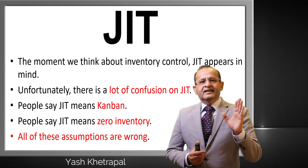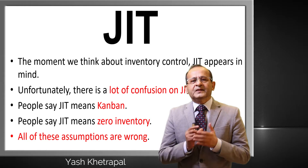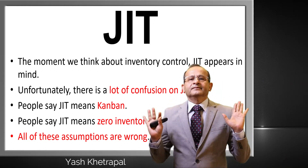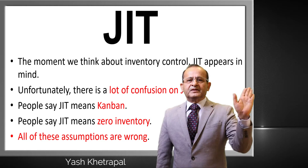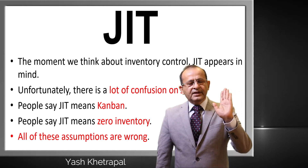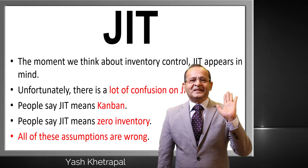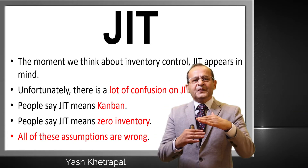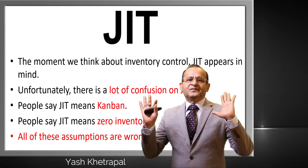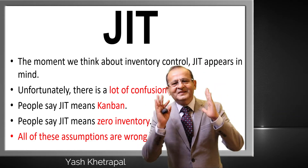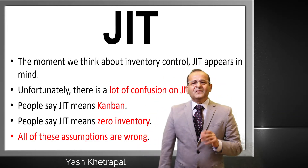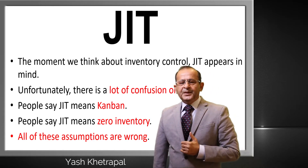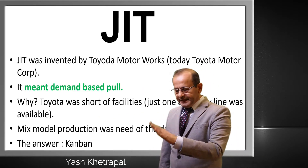If you maintain zero inventory you cannot run a plant — production is not possible with zero inventory. You have to have at least some inventory to keep your production going smoothly. Without that you cannot run your factory. What does JIT mean? Just-in-time means your material must come when you need it.